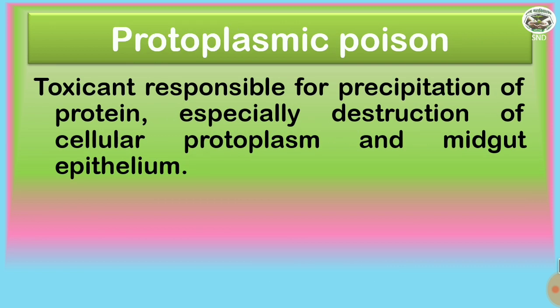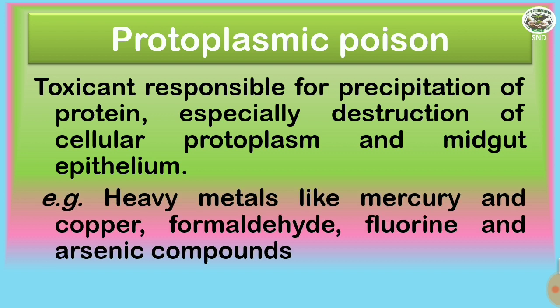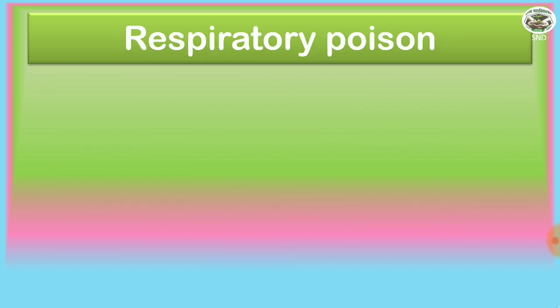Protoplasmic poisons — the toxicant responsible for precipitation of protein, especially destruction of cellular protoplasm and midgut epithelium. Examples are heavy metals like mercury and copper, then formaldehyde, fluorine, and arsenic compounds.